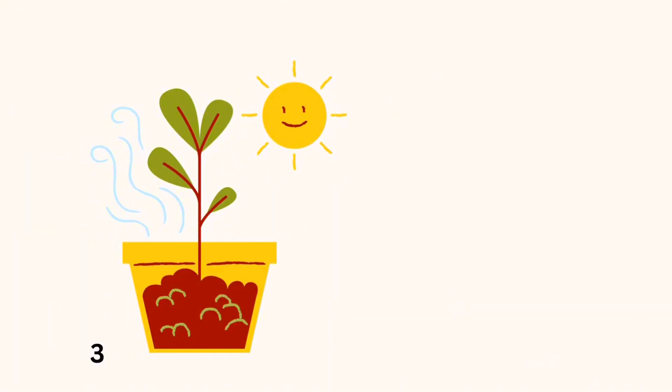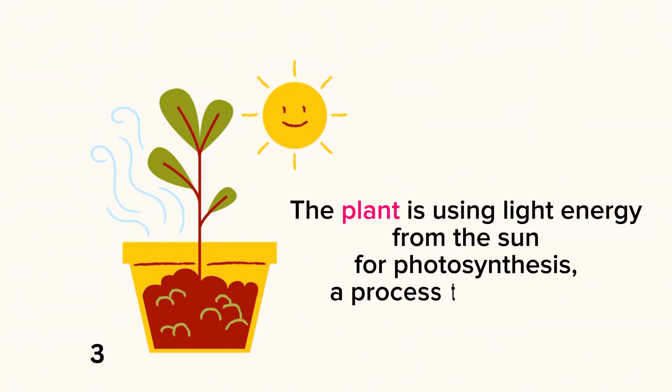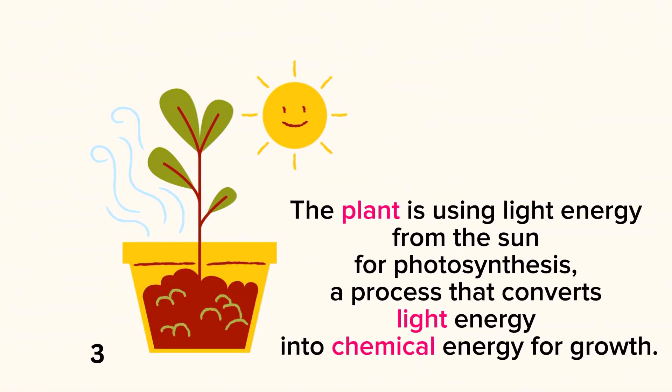Picture number three — what do you see? The plant is using light energy from the sun for photosynthesis, a process that converts light energy into chemical energy for growth.